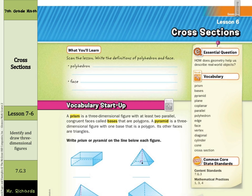Write prism or pyramid on the line below each figure. Well, our first, we have a rectangular base, and then we do have rectangular faces. So we have our rectangular base here, and then we have rectangular faces as well. Also, something special about these faces, they're parallel and congruent. So this face is parallel with the face back there, and this face here is congruent and parallel to that face there.